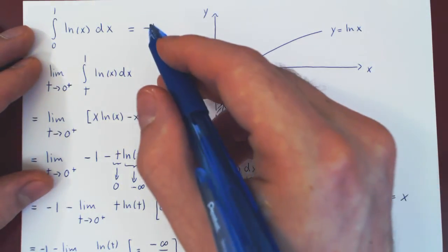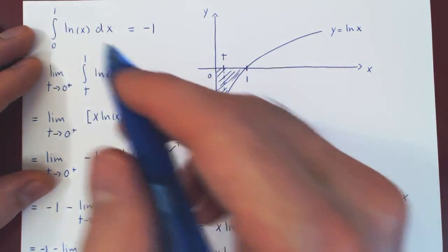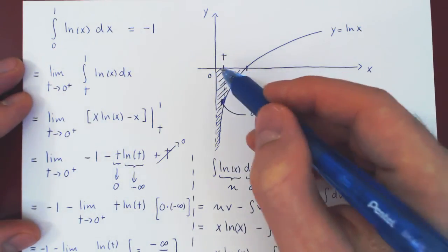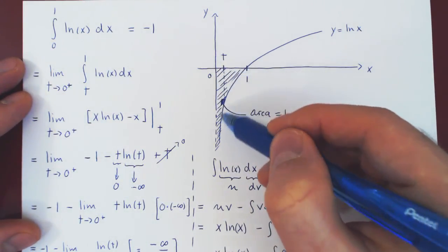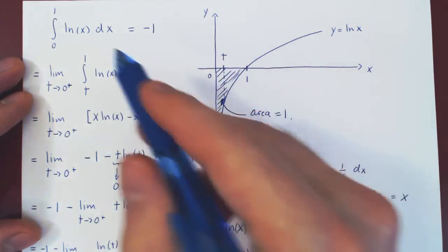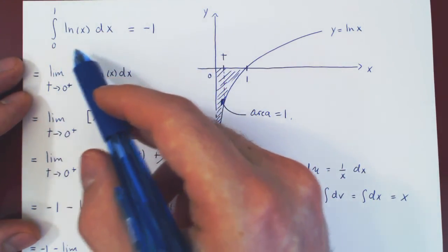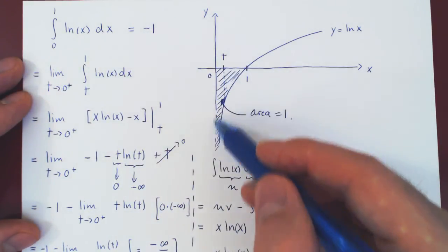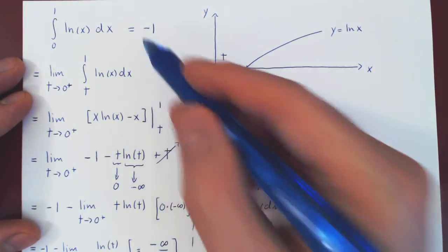And again, the answer is not 1, but negative 1, as the definite integral, if it does exist, returns not the area, but the net area below the curve. So, whenever on an interval the curve is negative, the definite integral here, given that it was improper, if it exists, will return the negative of the area. Therefore, negative 1.